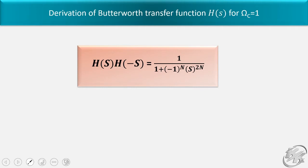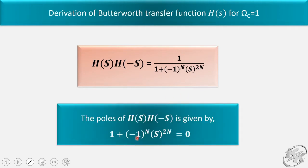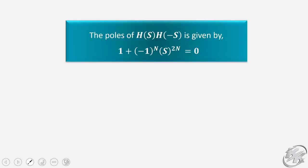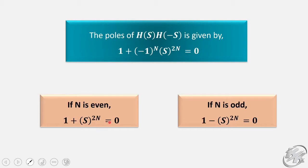The poles of H(s)·H(-s) equal to 0 are given by the denominator. When n is even, (-1)^n becomes +1, so 1 plus s^(2n) equal to 0. And if n is odd, 1 minus s^(2n) equal to 0.